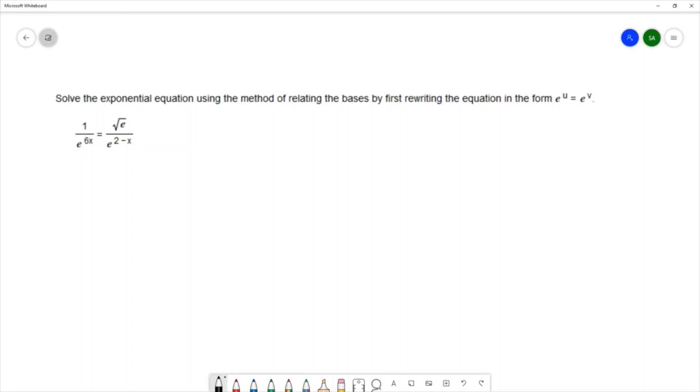On the left hand side we're able to use the properties of negative exponents to move this e to the 6x to the numerator. We can write that as e to the negative 6x.